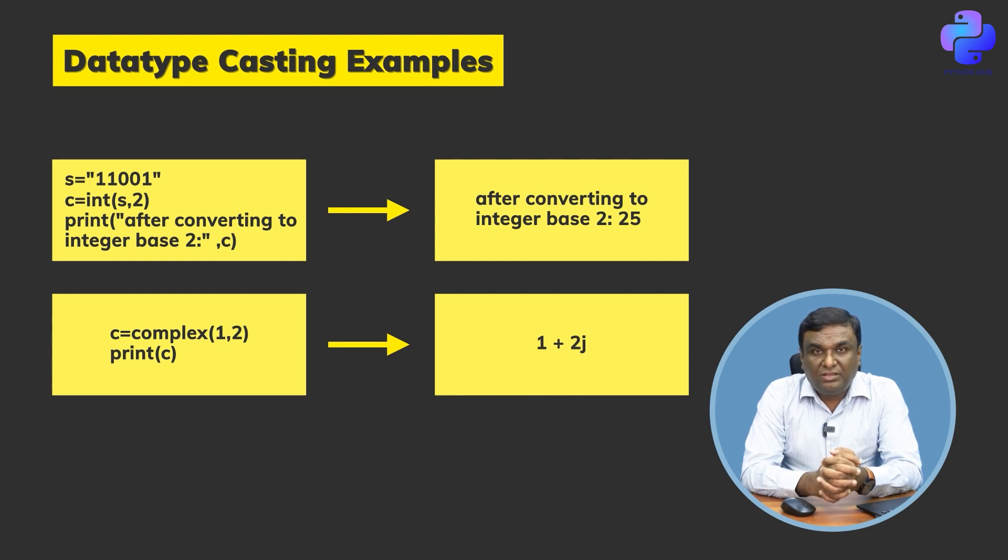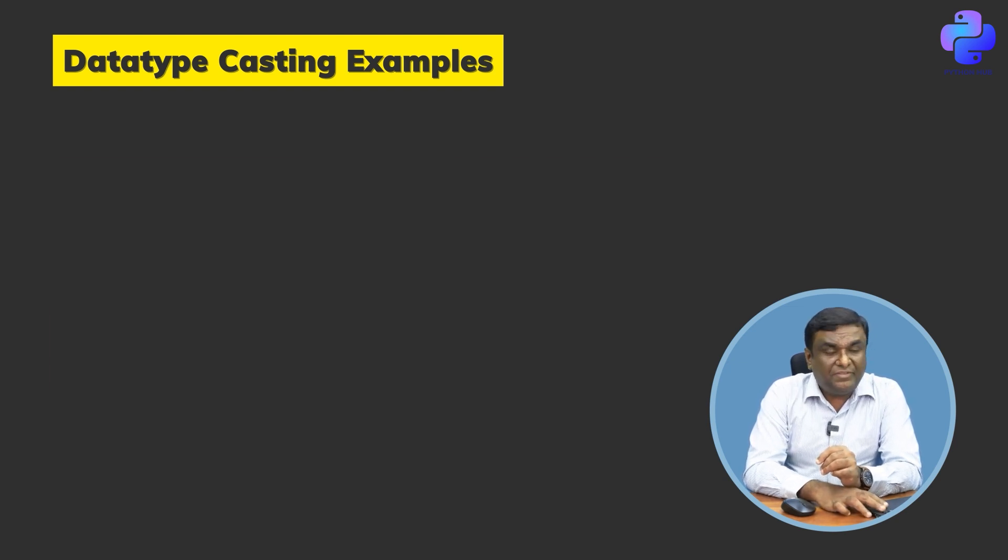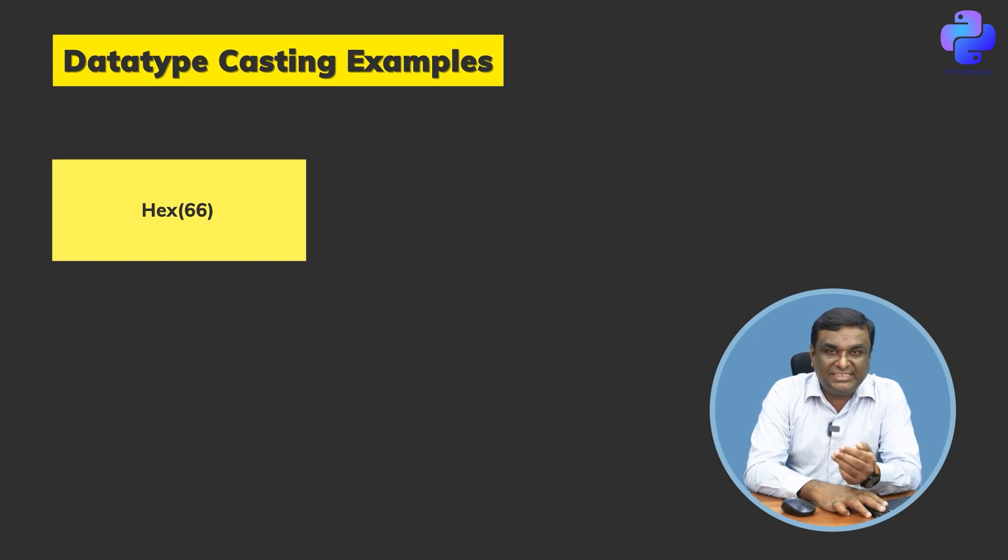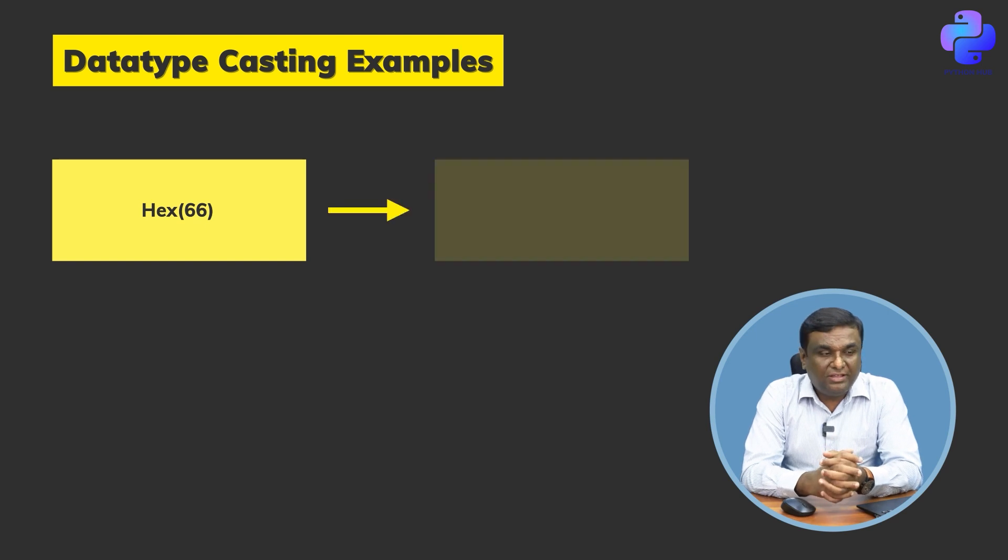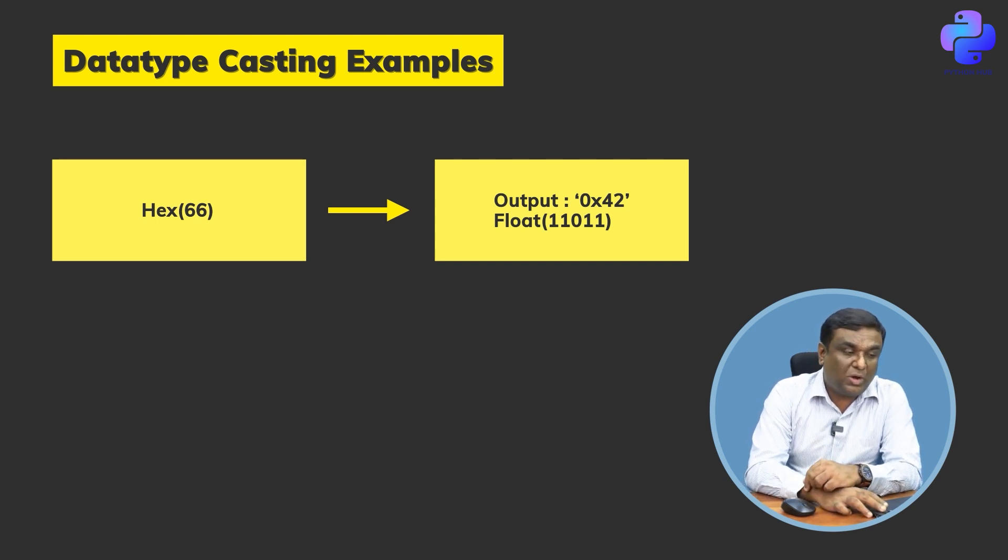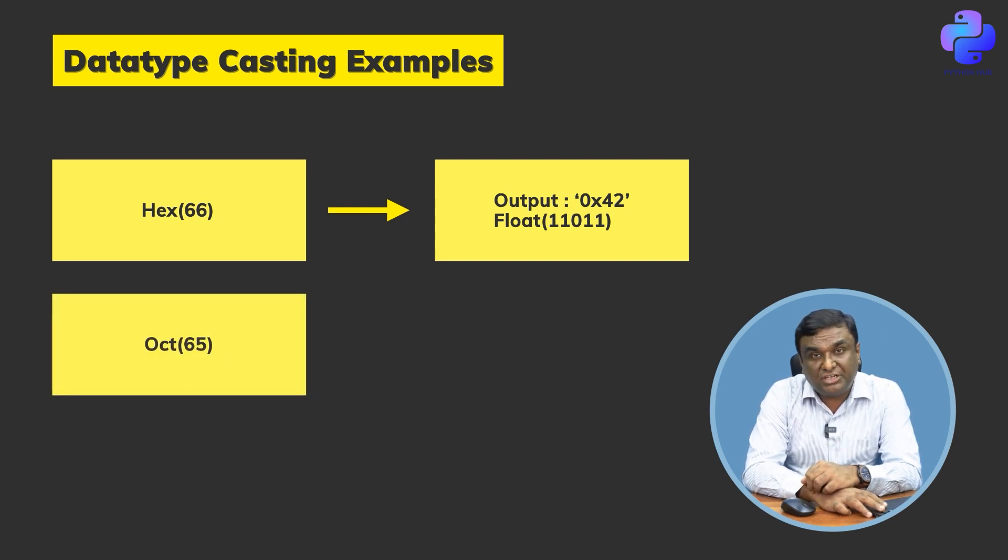1 + 2j. A normal set of integers are converted to complex data type here just by passing it to the complex function. Same way, let me use hex() as a function. When I use it and pass 66 as data to it - that's float of 11011, that's what has happened here.